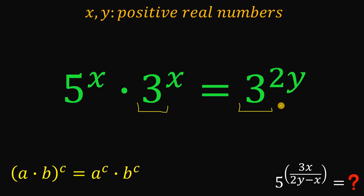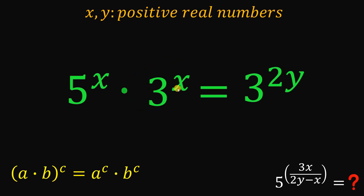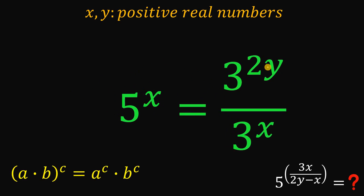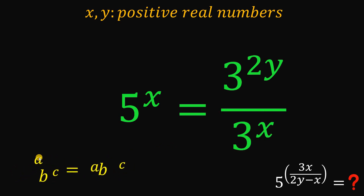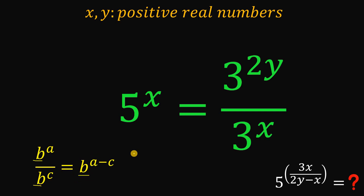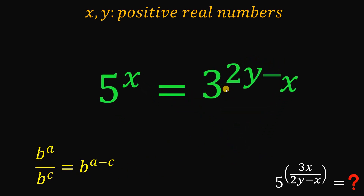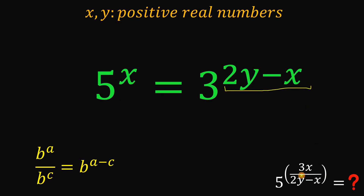Notice we have the same base of 3 on both sides, so let's divide both sides by 3 raised to the power of x. This gives us 5 raised to the power of x equals 3 raised to the power of 2y over 3 raised to the power of x. Using the quotient law of exponents — b^a over b^c equals b^(a minus c) — the right hand side becomes 3 raised to the power of 2y minus x.